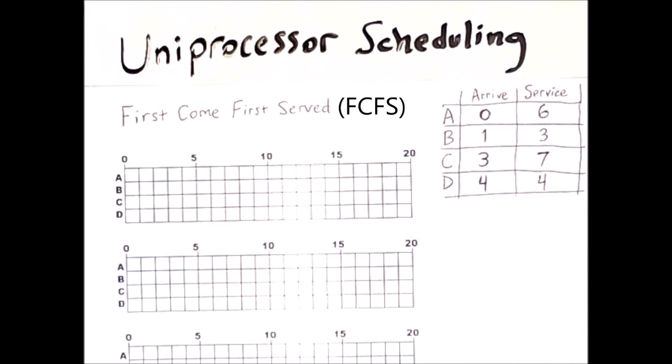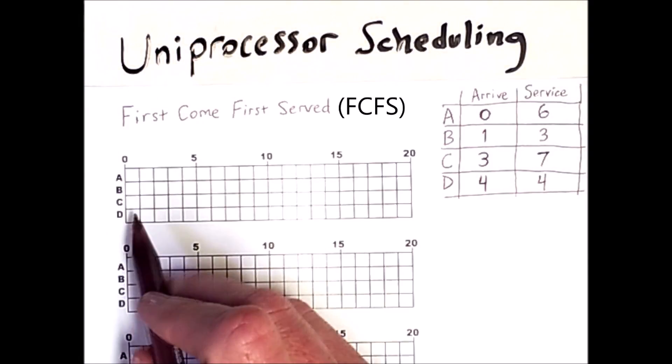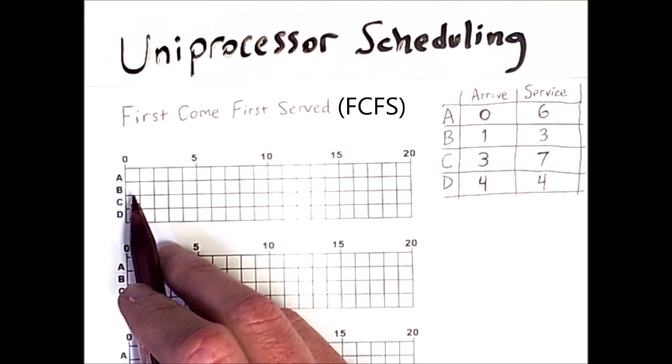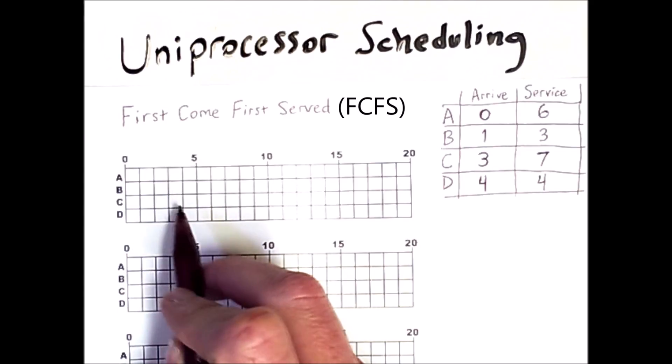Now in first come first serve we simply execute whichever process arrives first until it finishes and then when it is finished we execute the next process that arrives and that results in a layout of processes on the grid like so.